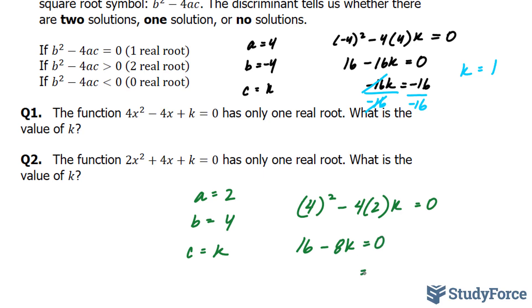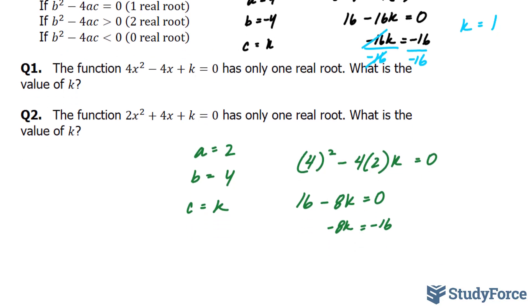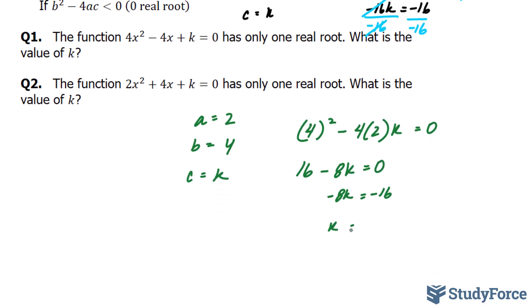Solving for k now, we end up with -16 on the right side and -8k on the left side. Therefore, k = -16 / -8, which equals 2.